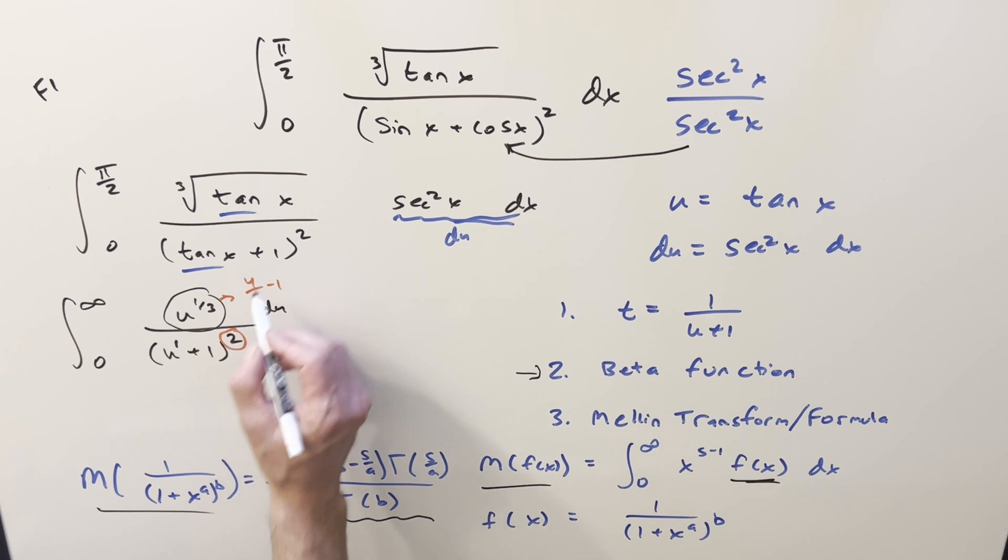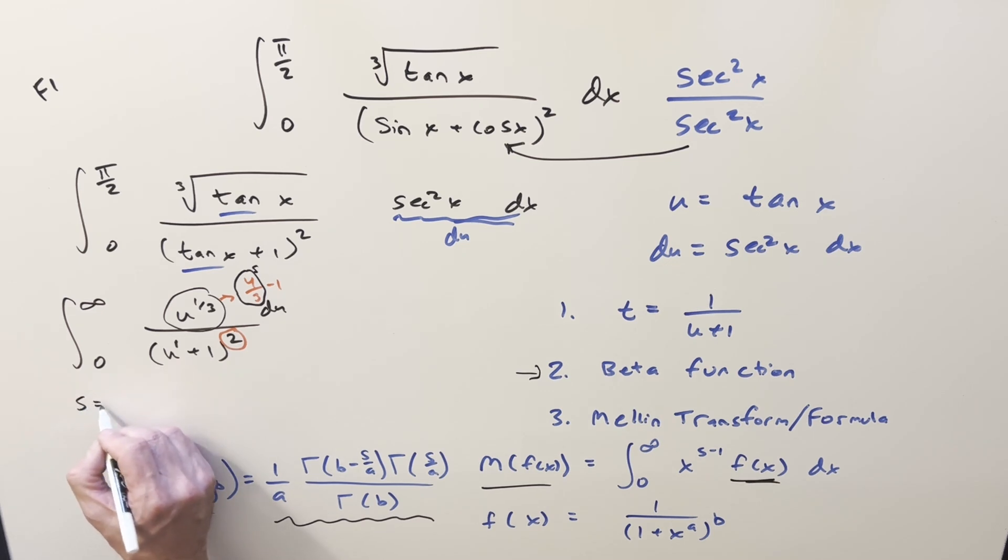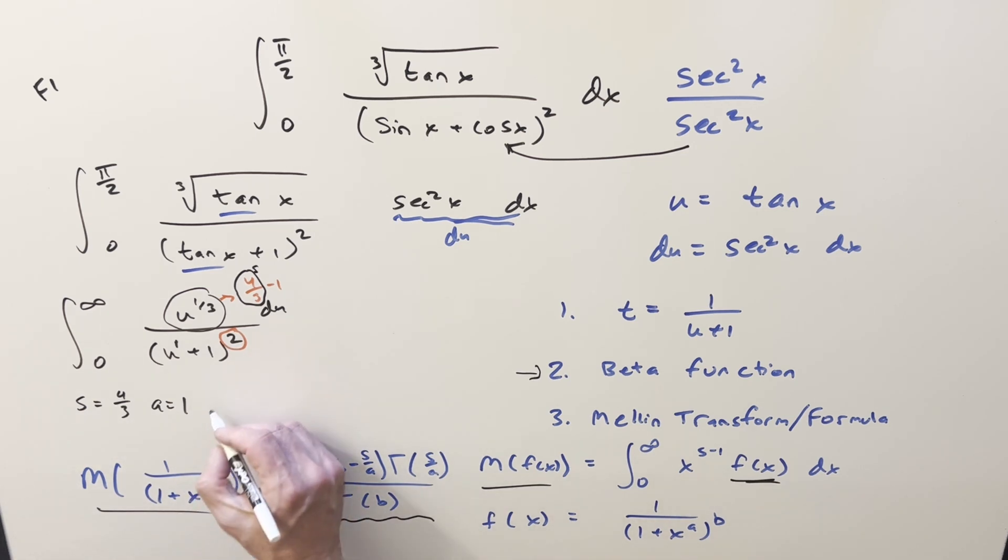We know all these values. In the numerator, this s minus one part, the s value is what we found before, four thirds. So we can say s is going to be four over three. Like I said, our a value equals one. And the b value, this exponent here, is just going to be a two.